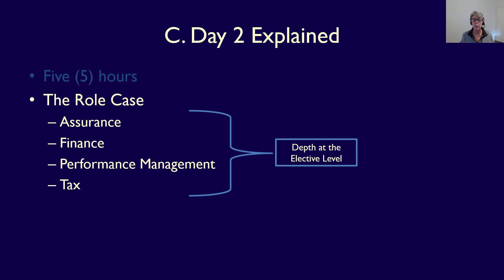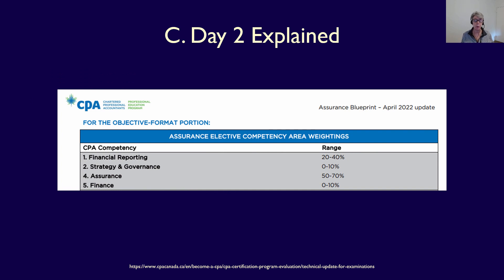To understand what that means for the exam, let's look at the exam blueprint for each elective. Here's the assurance blueprint for April 2022. The coverage for this elective includes financial reporting, strategy and governance, assurance, and finance. That means when you choose the assurance role on Day Two, the issues tested in that role can include any of these technical areas, and you must show depth — competence — in them. Don't think that just because you chose assurance they'll only test you on assurance; they can also test finance, strategy and governance, and financial reporting.